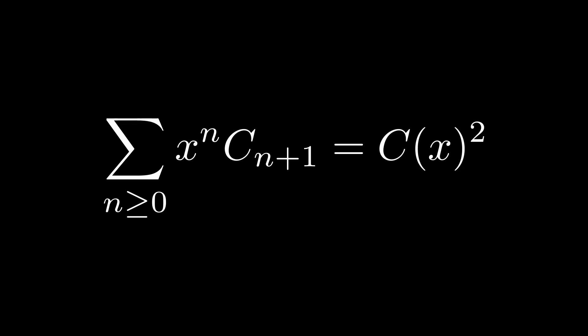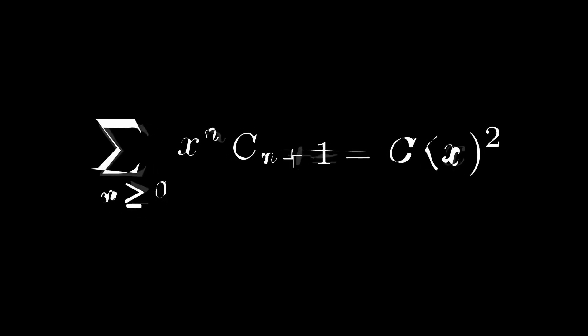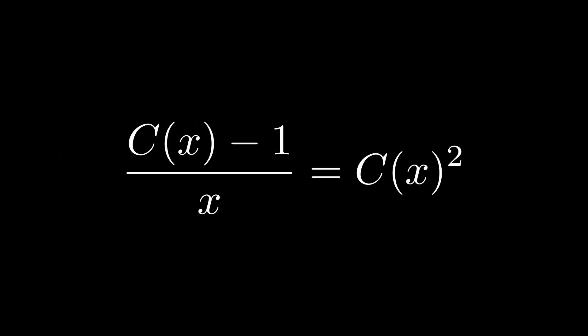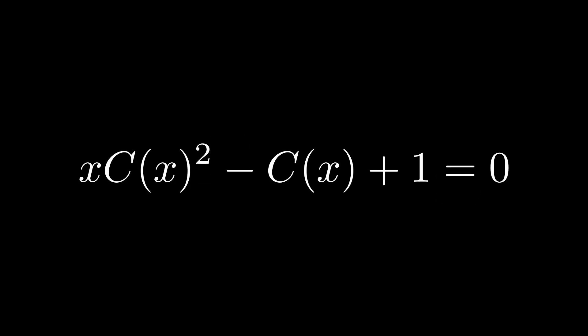The right-hand side looks very similar to our original generating function. In fact, there just happens to be an index shift, which can be fixed by subtracting one and then dividing by x. Thus, on both sides, we obtain the following equality, which can be re-expressed as a quadratic equation for c of x.